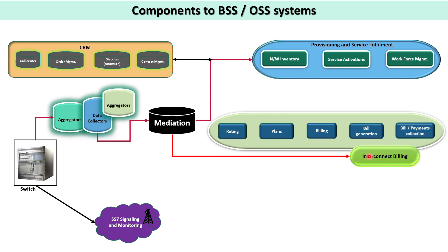Mediation is also connected to the interconnect billing system. On the operator side, there are basically two different billing systems: one for wholesale and retail billing, and the other for interconnection billing. Interconnect billing handles situations where carriers carry calls from one point to another — those carriers need to be charged. The logic for carrier charges is applied in the mediation system and those CDRs are given to the interconnect billing system, where different tariffs applicable for different carriers are rated.